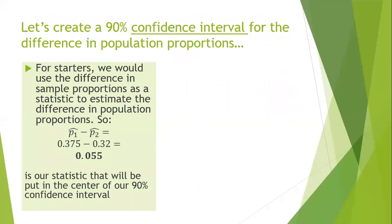We'd like to create a 90% confidence interval for the difference in the unknown population proportions. We should use the difference in our sample proportions as a statistic to help estimate the difference in the unknown population proportions — that is, P1 hat minus P2 hat. Since P1 hat was 0.375 and P2 hat was 0.32, the difference is 0.055, or 5.5%. That difference in sample proportions goes right in the center of our confidence interval.